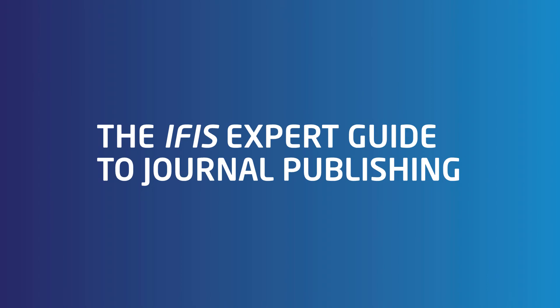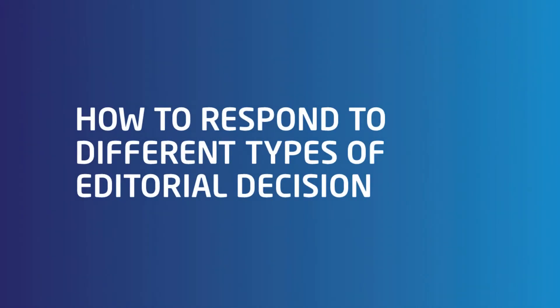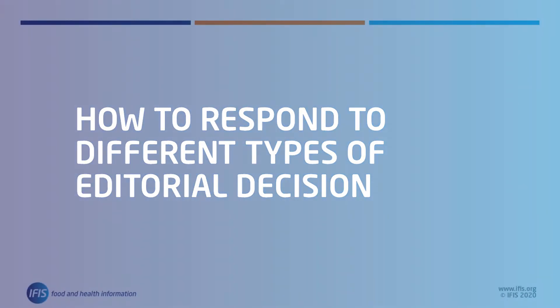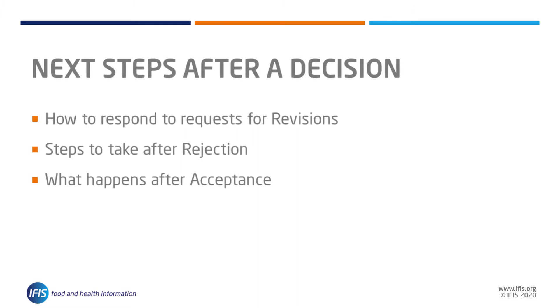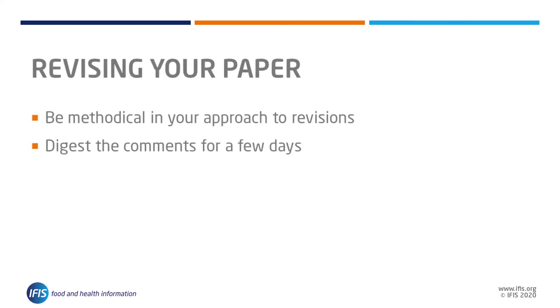In this part of our expert guide to journal publishing, we follow on from our 'What to Expect from the Peer Review Process' video and prepare you for the decisions you might receive. We will look at how to respond to requests for revisions, steps to take should you receive a rejection decision, and what happens after acceptance.